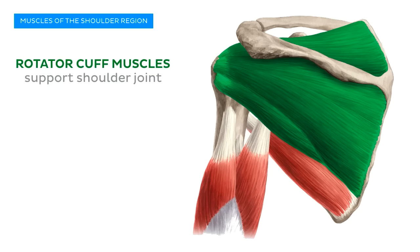The subscapularis muscle has its origin across the entirety of the subscapular fossa of the scapula. As you can see in the illustration, the large belly of the subscapularis tapers off as it reaches its insertion, which is generally located on the lesser tubercle of the humerus.